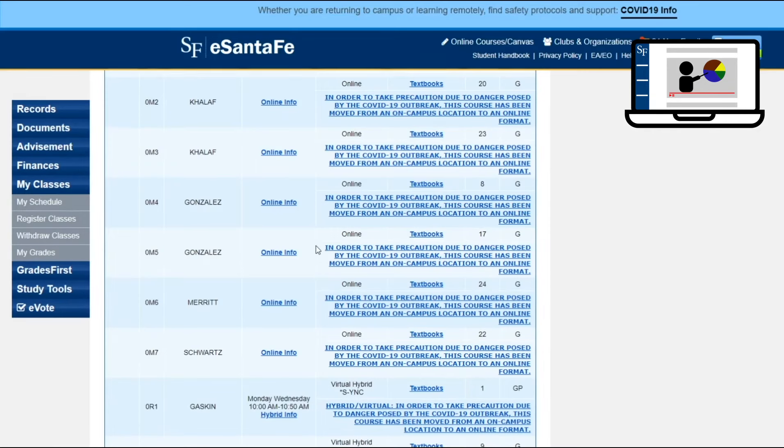SF Online is a great option if you're a caregiver or have a work schedule that changes, or if you have limited transportation or any other challenge that makes it difficult for you to show up to a class consistently. Some people just prefer it. Some students earn their entire degree through SF Online. If you want to try it out, look for classes that just list online as their location.